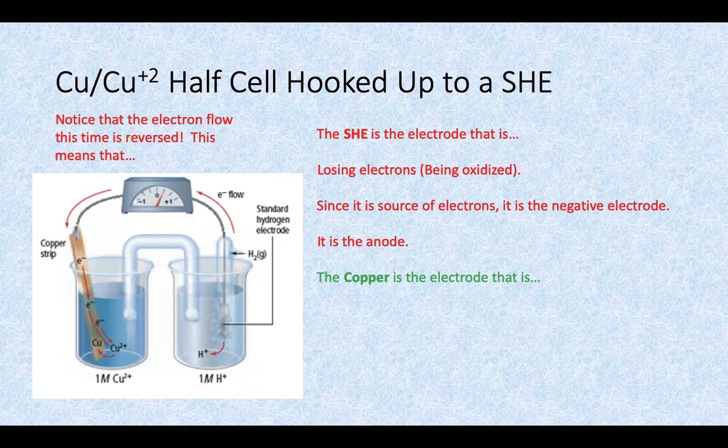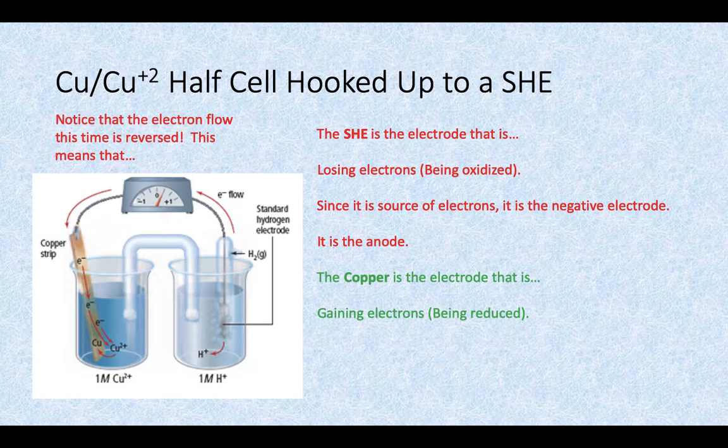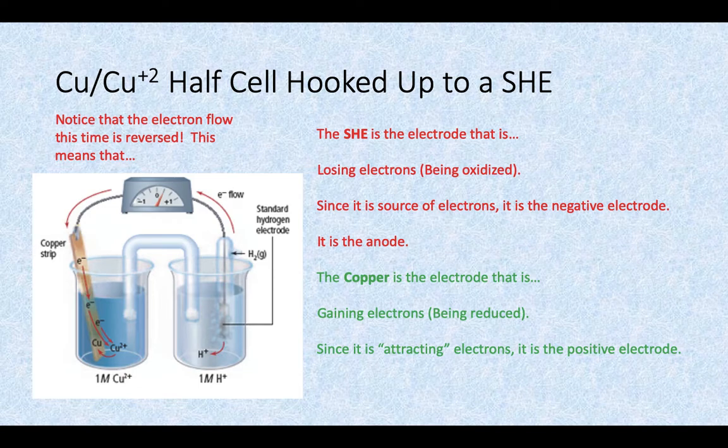The copper is the one that's gaining the electrons. It's going towards the copper, so the copper is going to get reduced in this reaction. Since it's the one that's accepting the electrons, the electrode itself must be the positive electrode, the cathode.